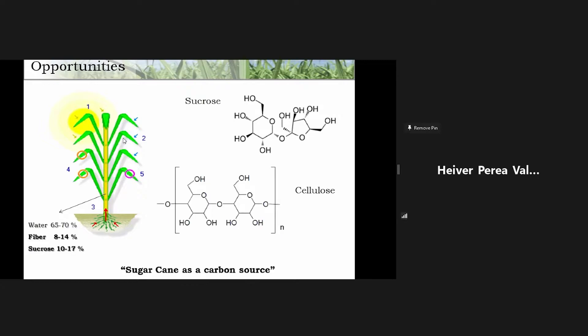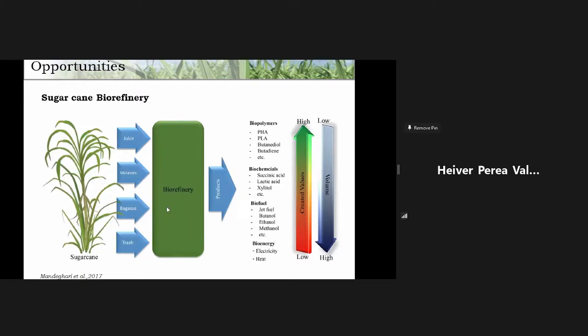The sugar industry has a big opportunity. As you can see, the sugar cane plant contains around 65 to 70 percent water, 8 to 14 percent fiber, and 10 to 17 percent sucrose. Both sucrose and cellulose in the fiber are made with carbon. So sugar cane is a carbon source — that's the important opportunity we have in the sugar industry. We can make many products from carbon.